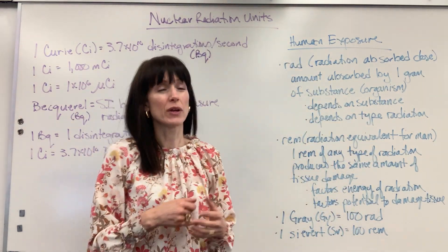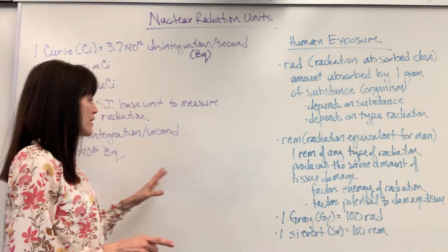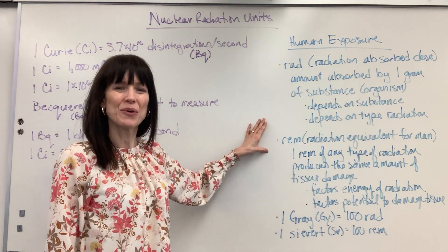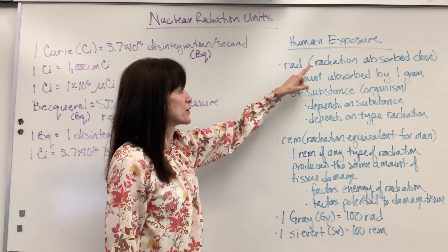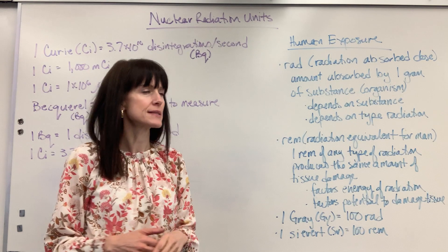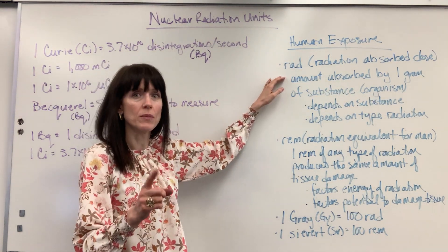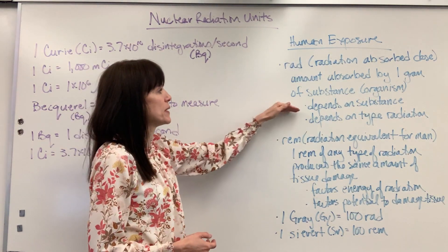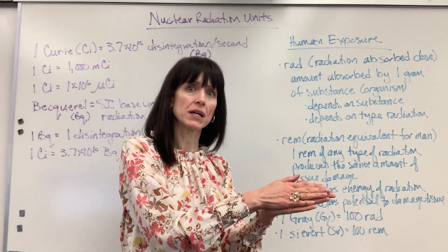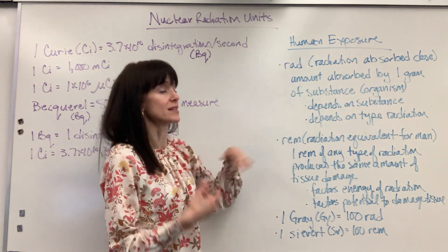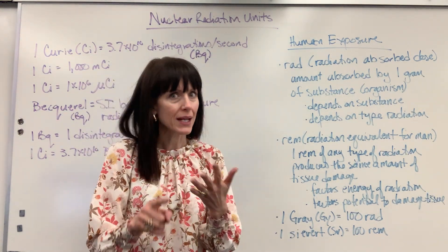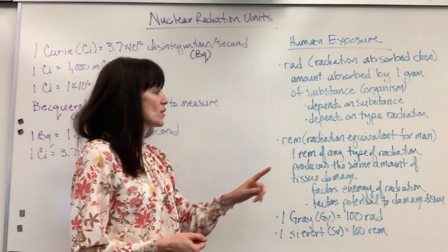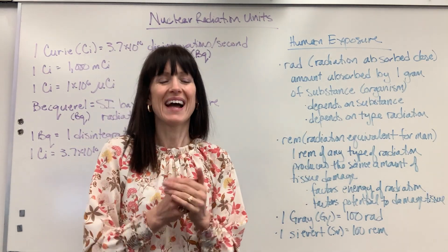Now, how we apply this to living organisms — we have some more units. RAD stands for radiation absorbed dose, and this can be used for any living organism. It is the amount absorbed by one gram of a substance, by one gram of this living organism. It depends on the substance — am I talking about a plant or a dog? — and also on the type of radiation: alpha, beta, or gamma. Next, we have REM: radiation equivalent for man, which is specific to humans as the living organisms.